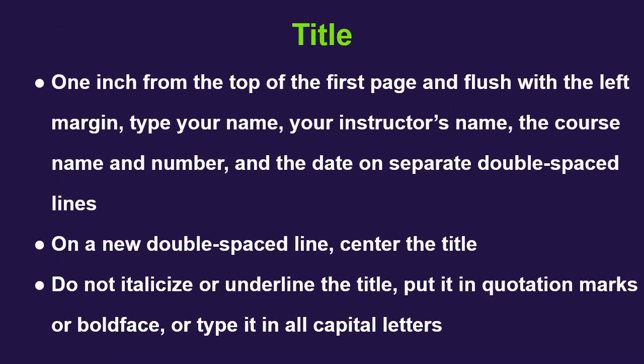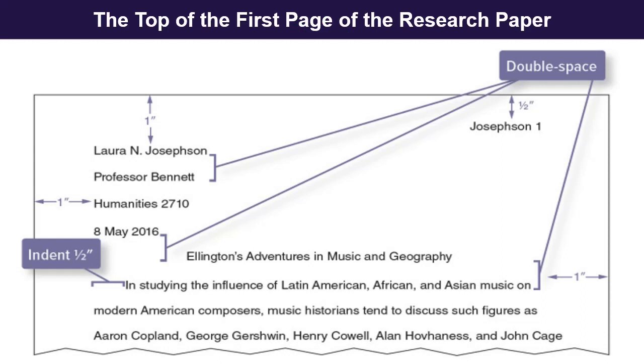The next one is the title. One inch from the top of the first page and flush with the left margin, type your name, your instructor's name, the course name and number, and the date on separate double-spaced lines. On a new double-spaced line, center the title. Do not italicize or underline the title, put it in quotation marks, boldface, or type it in all capital letters.